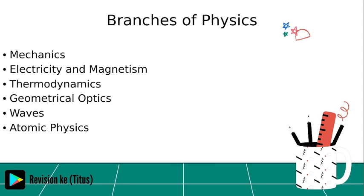Geometric optics is the study of the behavior of light as it traverses various media. Go down to the comments and tell me what waves is about and what atomic physics is about.